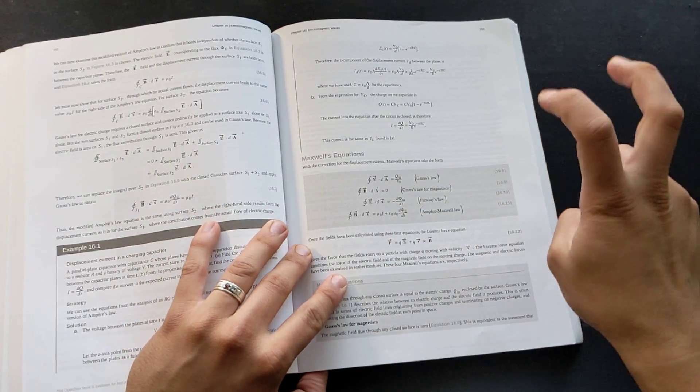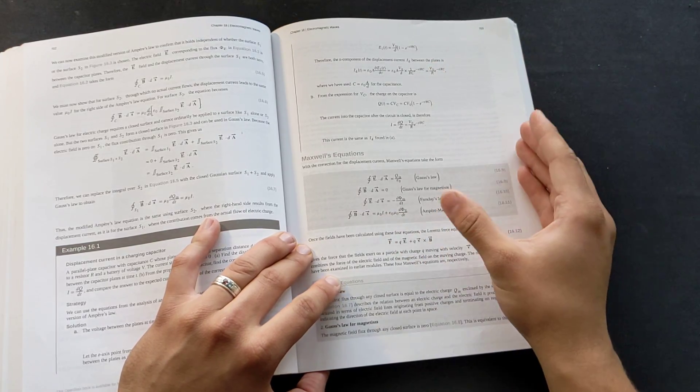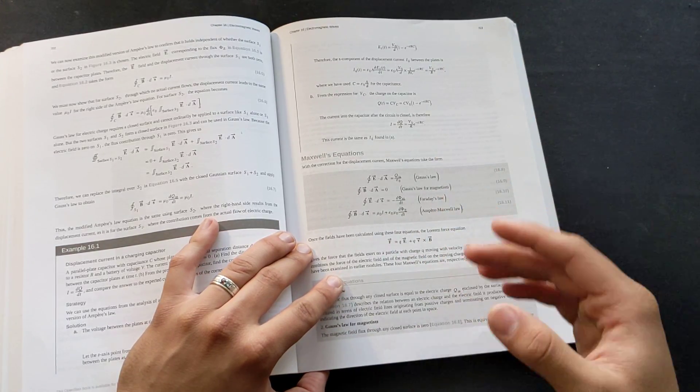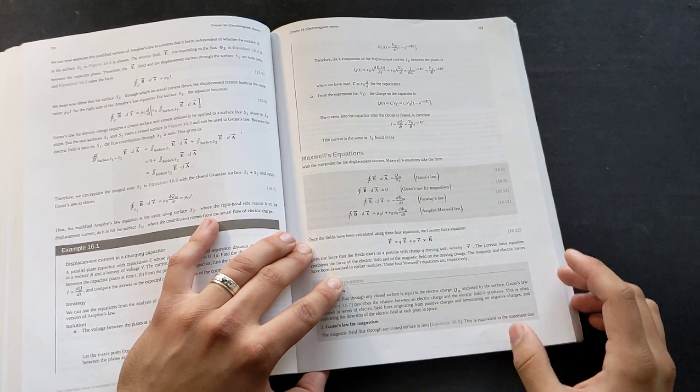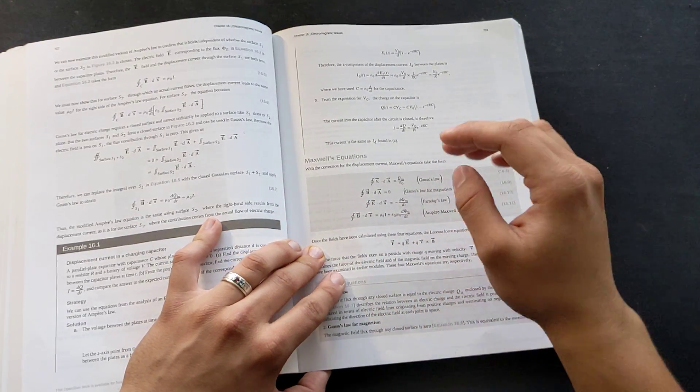So these are kind of like the easy mode version of Maxwell's equations. You can use the gradient form, and they're a little bit more concise, and a lot of times more useful for certain problems. But the integral form of these Maxwell's equations are really, really nice.